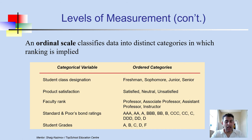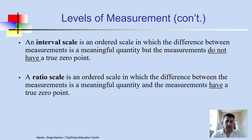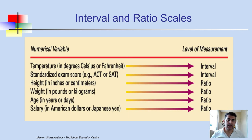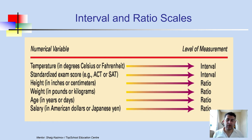The interval scale is an ordered scale in which the difference between measurements is a meaningful quantity, but measurements don't have a true zero point. The ratio scale is an ordered scale in which the difference between measurements is meaningful and measurements do have a true zero point. An example of interval is temperature in Celsius or Fahrenheit — it has a zero point but also goes negative, for instance negative 5 or negative 20 degrees Celsius. SAT exam scores are also interval scale.